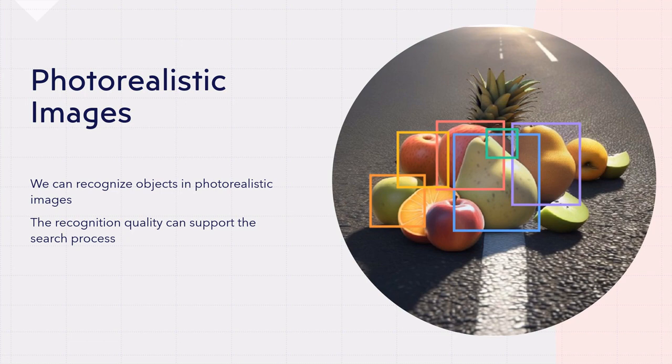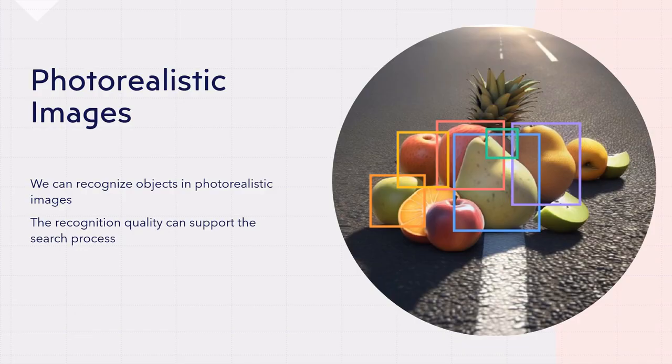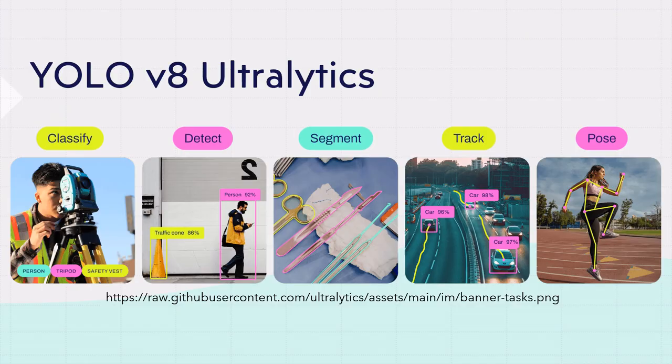We are going to work with photorealistic images because there are visualization systems that can identify objects in images. The one we are going to use is called YOLO, and it provides quality scores for the identification process. The clearer the object is for the system, the better for our actual generation process. So, what is YOLO? YOLO is a system that identifies objects in images.